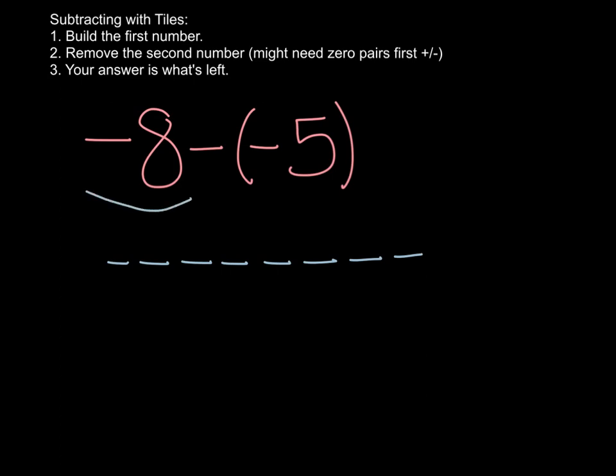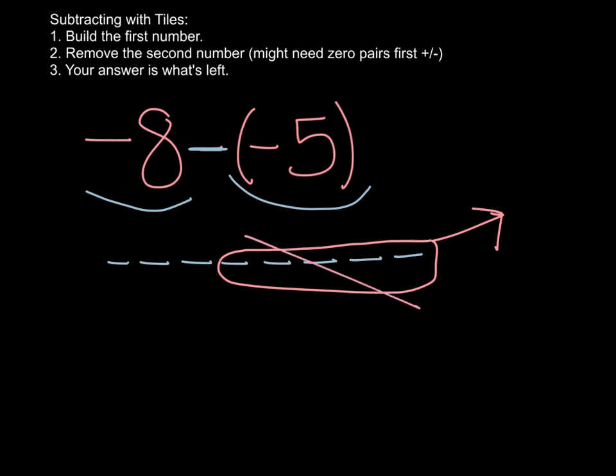And then it says remove the second number. And I know that I'm removing because it says we are subtracting here. And the second number is negative 5. So it says we have negative 8. We're taking away negative 5. I'm just going to circle them and cancel them out here. We're removing those and then whatever's left is your answer. So if I count them up, I've got 1, 2, 3, and those are negatives. So my answer here is negative 3. Pretty straightforward. We could take away what we needed to see what was left.